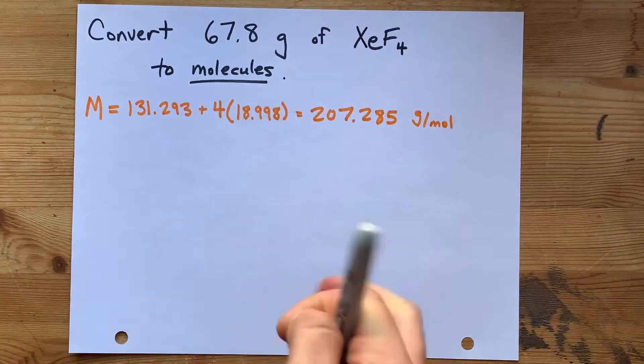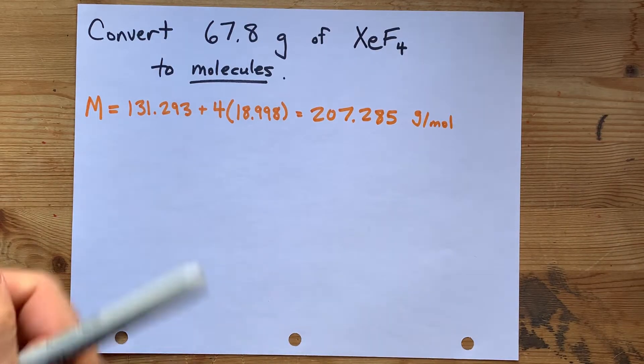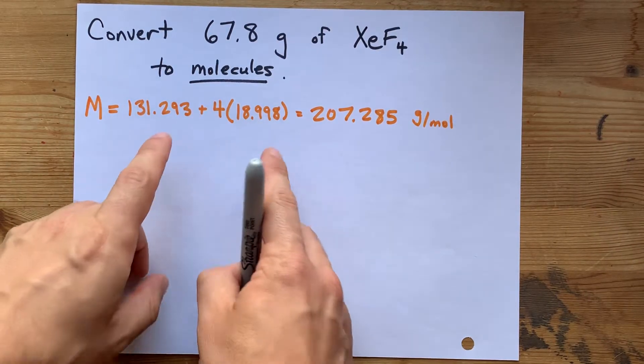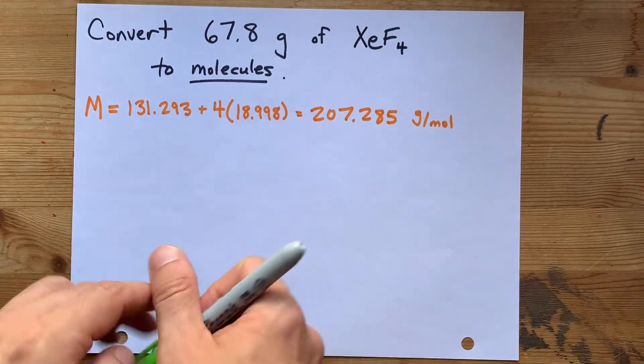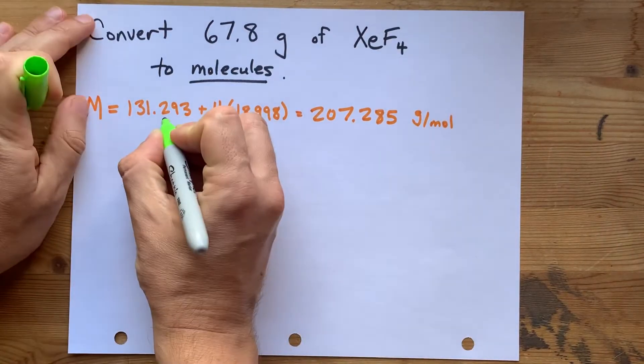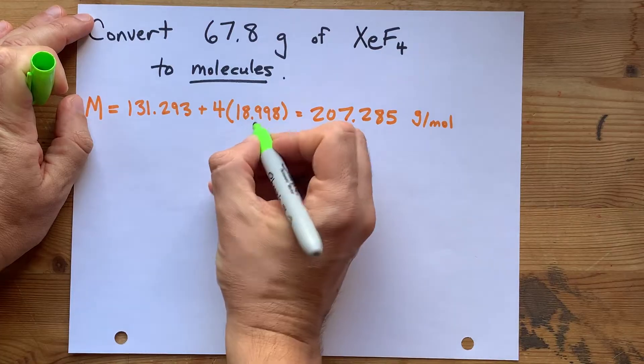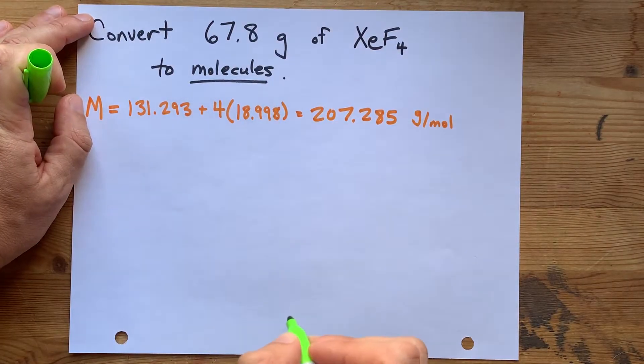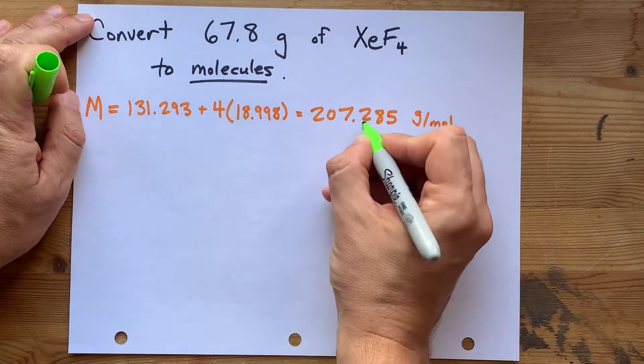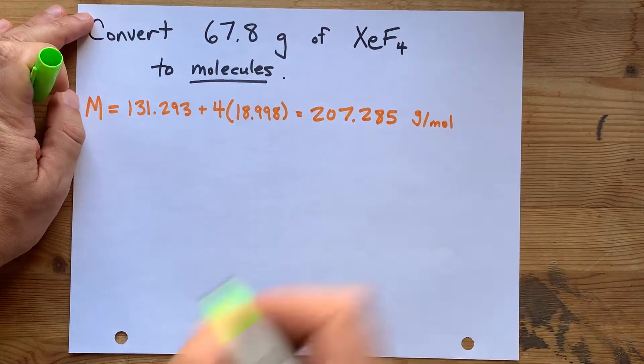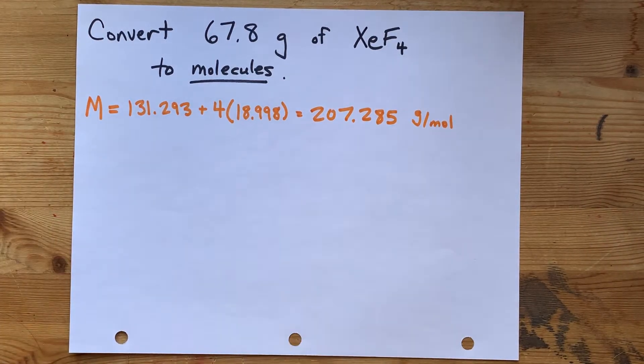Now, in terms of significant figures, I want to point out that when you're adding things together, you're using the fewest number of decimal places that you use. There's 1, 2, 3 decimal places here, 1, 2, 3 decimal places here, and so I'm allowed to use 1, 2, 3 decimal places here. This is written with significant figures. That's good.